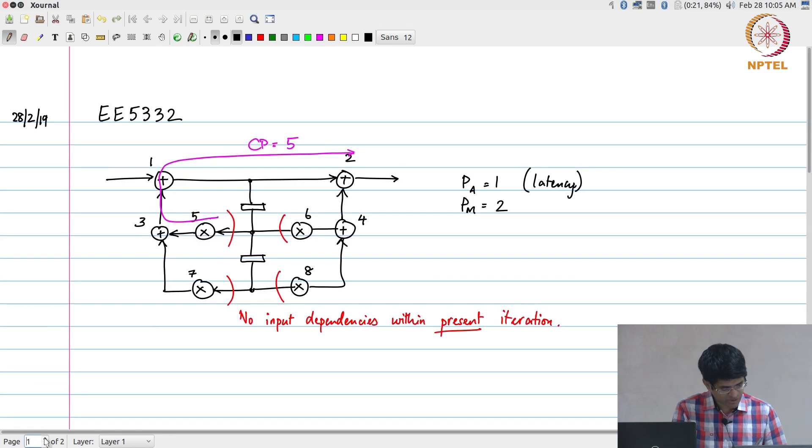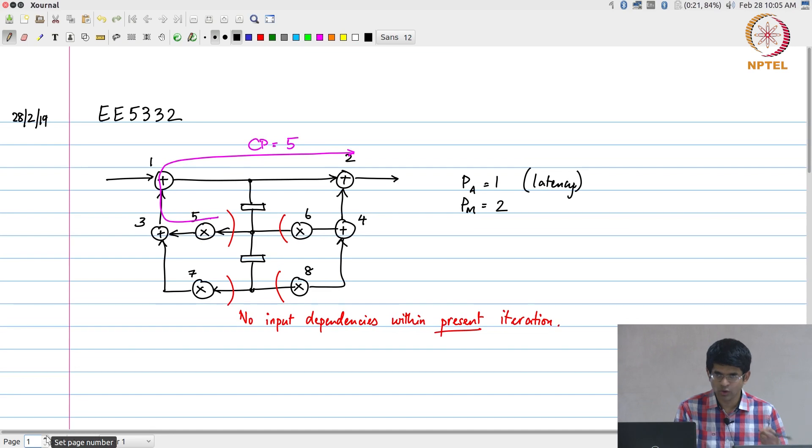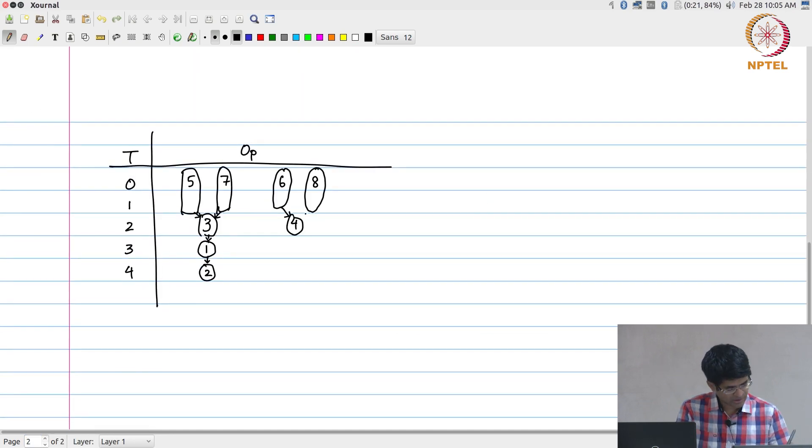And similarly, if we go back to this diagram, what we find is 6 and 8 can also be scheduled at time 0 and takes 2 clock cycles to complete. As soon as they are done, 4 can then execute. It has a dependency on the outputs of 6 and 8. And now the output of 4, even though it is ready, is going to be used by operation 2, but operation 2 is also waiting for the output of 1. So even though 4 has generated data, I cannot execute 2. I need to wait until both its inputs are ready, which is why 2 still has to execute only in clock cycle number 4.